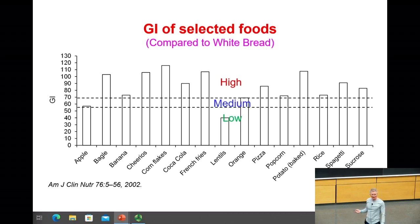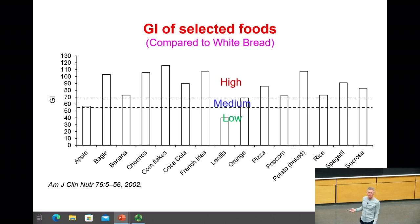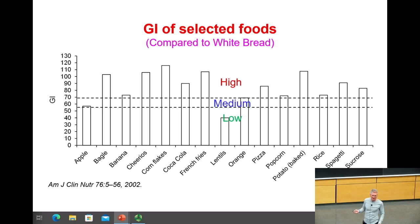People say they don't drink Coca-Cola, but then they go and eat Cheerios and corn flakes. If that's what you're looking at from a glycemic response perspective, really think about that. French fries are another popular high-glycemic food.